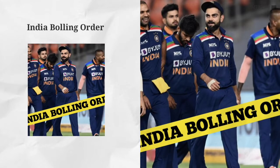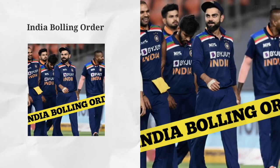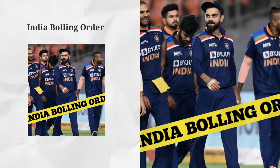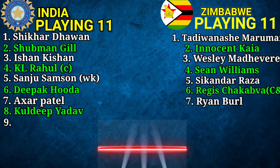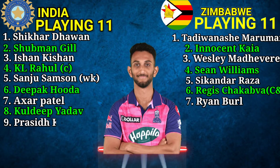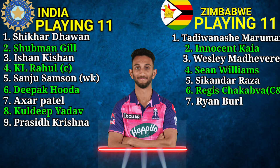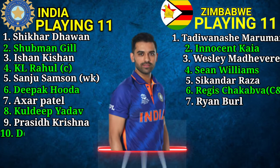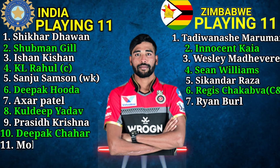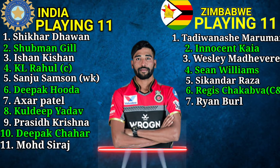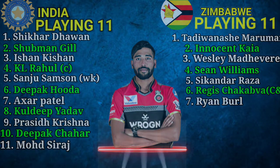India Bowling Order: 8. Kuldeep Yadav, Spin Bowler. 9. Prasidh Krishna, Fast Bowler. 10. Deepak Chahar, Fast Bowler. 11. Mohammed Siraj, Fast Bowler.